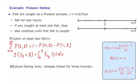The next question is: suppose that you have already fished for three hours. This can only happen under the second scenario — no fish were caught until time two, you continue, and no fish were caught until time three. Given that this event has occurred, what is the expected value of the future fishing time until a fish gets caught?